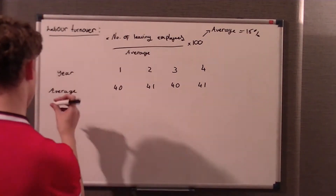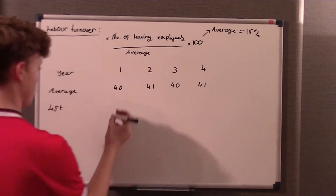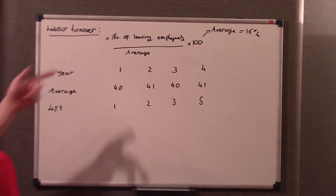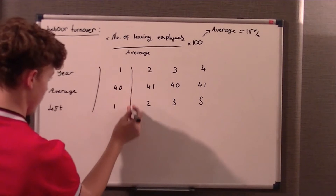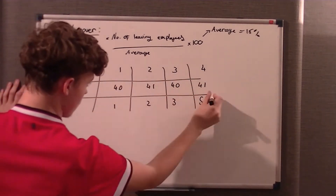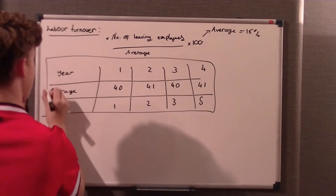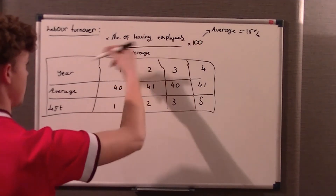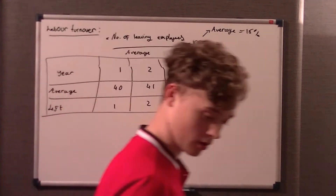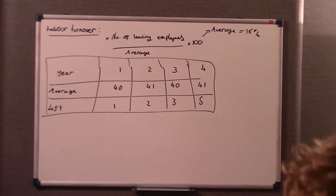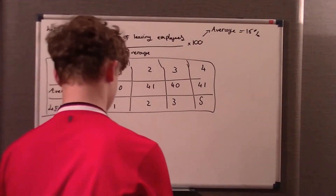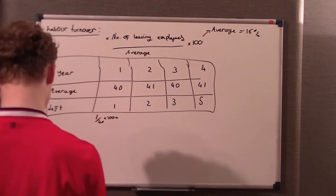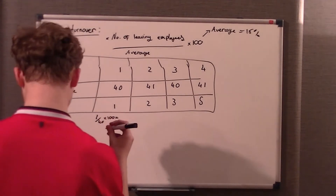So applying the formula — number of leaving employees over average, times 100. Year 1: 1 over 40 times 100 gives 2.5%. The UK average is 16%, so this company is much lower. We actually want to increase it if it's 2.5%. Year 2: 2 over 41 times 100 gives 4.8%.